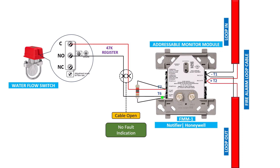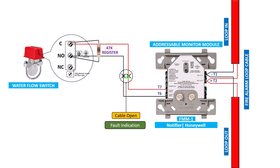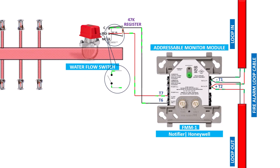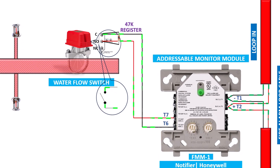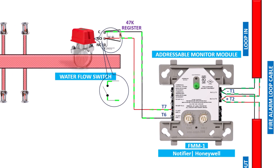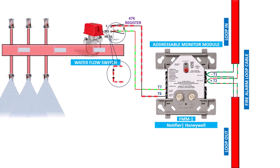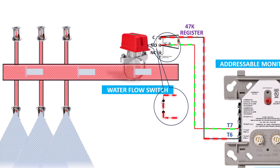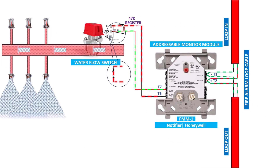If the EOL resistor is installed at the device terminal and the cable between the two opens or shorts, we get a fault indication on the monitor module. When the water flow switch is in normal condition, the circuit is open between the common and NO terminal, and a green indication is shown on the monitor module. If a fire event occurs, the sprinkler breaks and the flow switch operates — the circuit closes between the common and NO terminal, the monitor module receives the fire signal, a red indication is shown, and the monitor module immediately sends the fire signal to the fire alarm panel, alerting the system.